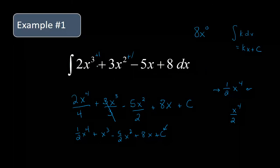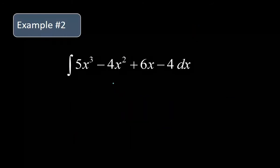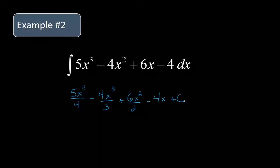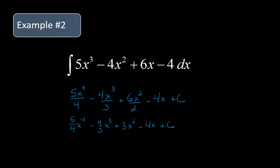So that's the example with the polynomial — raise the power by one, divide by the new power. Let's try another one: 5x cubed minus 4x squared plus 6x minus 4. We're going to have 5x raised to the fourth divided by the new power, minus 4x cubed over three, plus 6x squared over two, minus 4x, and plus C. We wind up with five fourths x to the fourth, minus four thirds x cubed, plus three x squared, minus four x, and plus C.